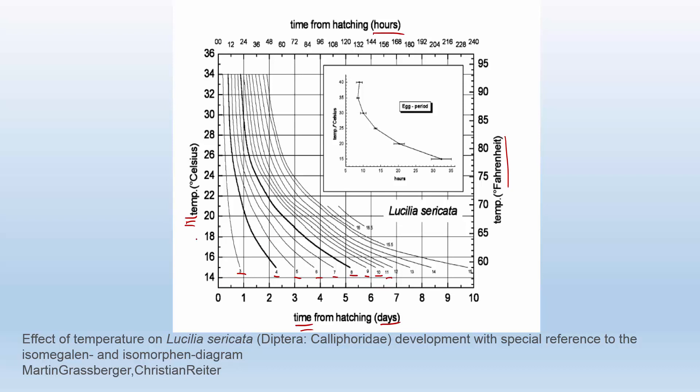And you can see that as temperature goes up, let's take a look at seven millimeters, just arbitrarily. At seven millimeters, if it's colder, it takes longer for the maggot to reach that size. Whereas if it's warmer, it takes a much shorter time to get to be that size.